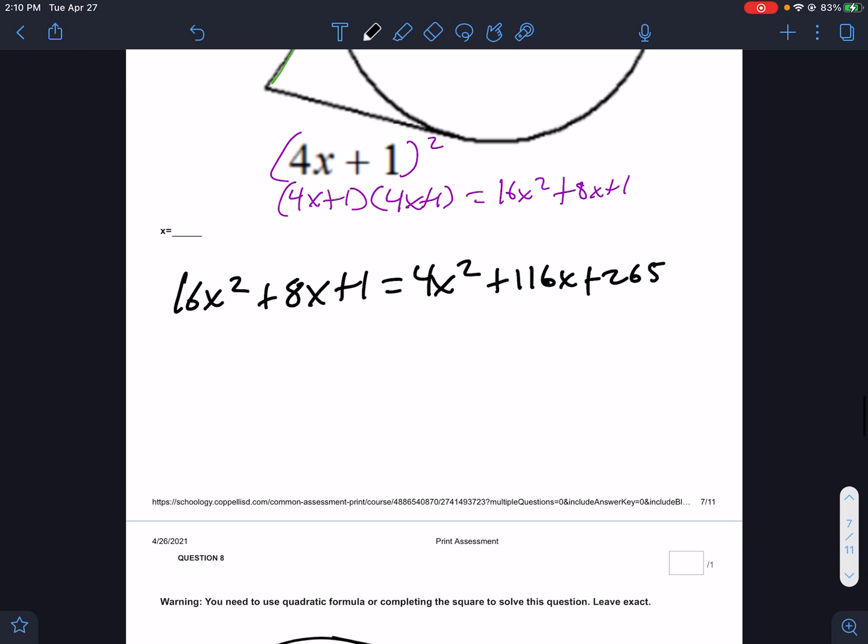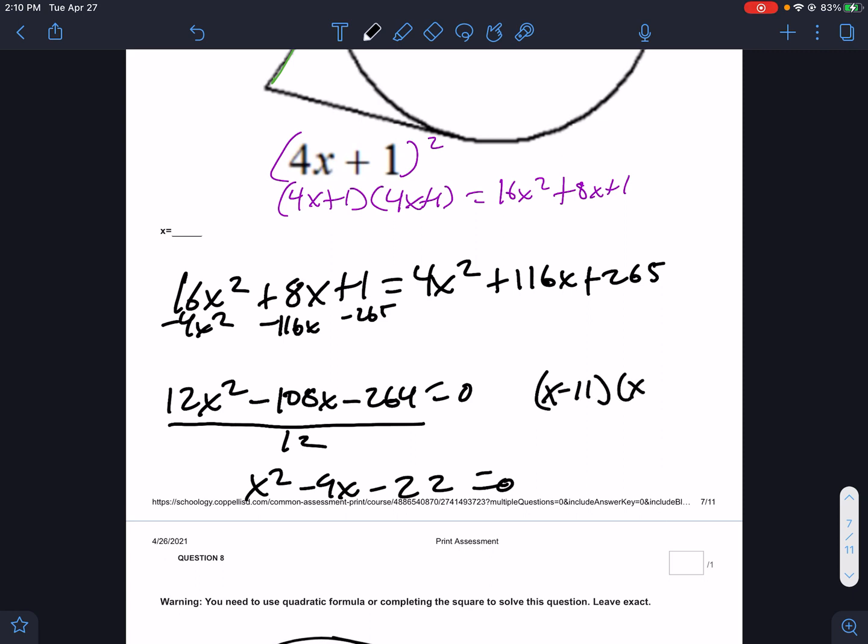So we end up with 16x squared plus 8x plus 1 equals 4x squared plus 116x plus 265. Clean this up. I want my x squared to stay positive, so I'm going to move the left side over. This will be minus 4x squared. That's 12x squared. Minus 116x, that's minus 108x. Minus 265, that's minus 264 equals 0. Now I told you today is only leading coefficients of 1. So this is divisible by 12, giving us x squared minus 9x minus 22. So that's x minus 11 and x plus 2. So x equals 11 or negative 2.